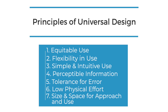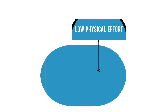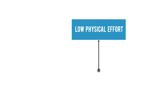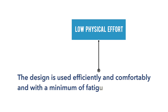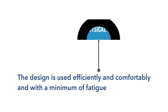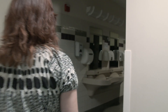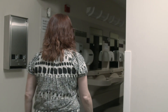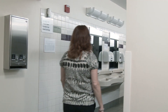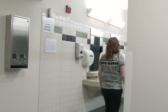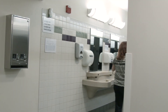The sixth principle of universal design is low physical effort. A design meets this principle when it can be used efficiently and comfortably and with a minimum of fatigue. Examples of low physical effort are motion-sensing lights that turn on as someone enters a room.